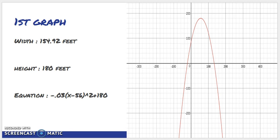This is the first graph. The width was 154.92 feet. It had a maximum height of 180 feet and the equation was -0.03(x-56)²+180.